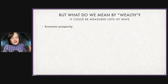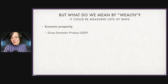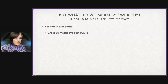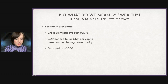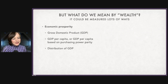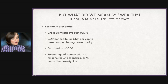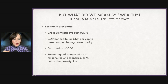One big area is economic prosperity. When I introduce this topic, this is probably what you think of automatically. Students will say GDP — gross domestic product. Or maybe GDP is not quite right; we need GDP per capita, or GDP per capita based on purchasing power parity, or we need the distribution of GDP. How many people have most of it? Maybe you'd go away from GDP and say you care about the percentage of people who are millionaires and above, or the reverse — what percentage of the population is below the poverty line?